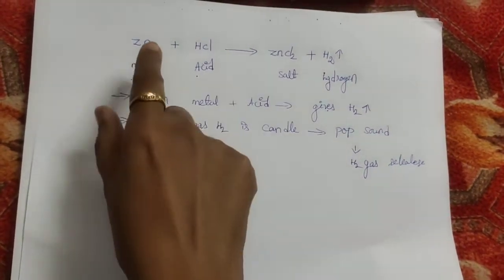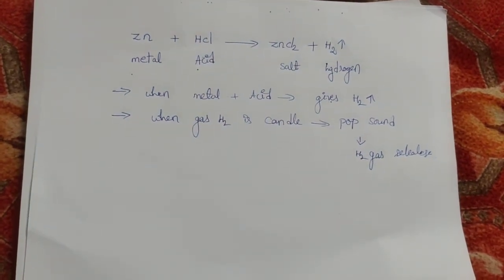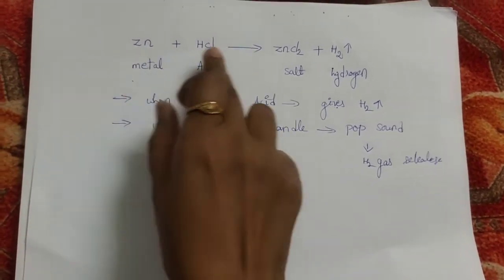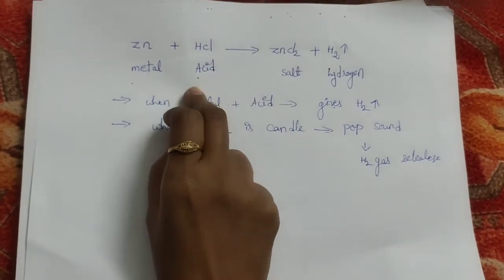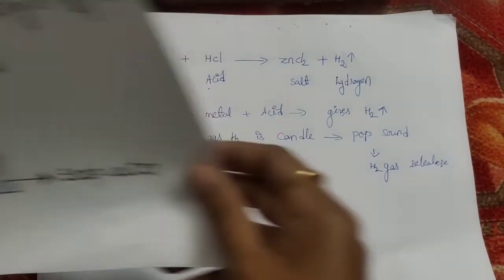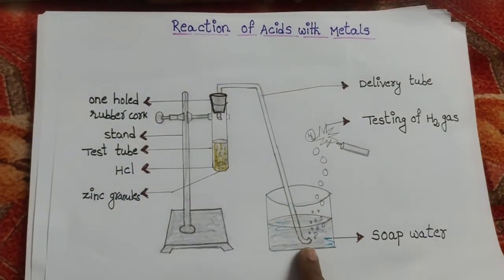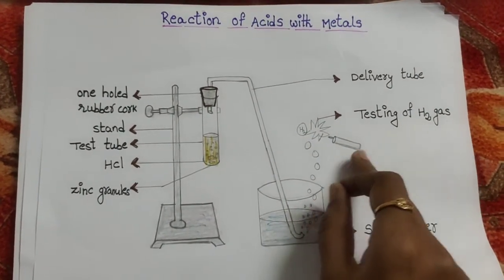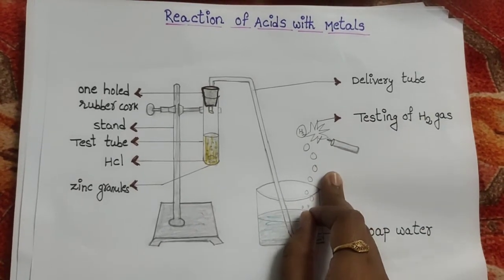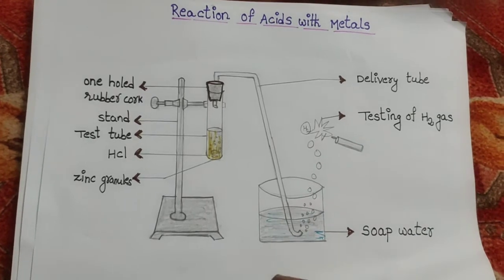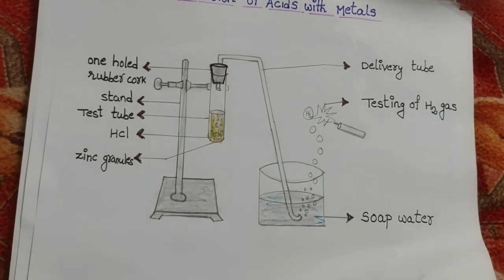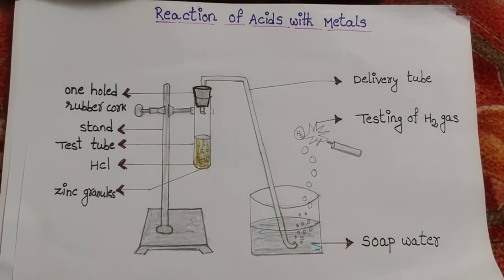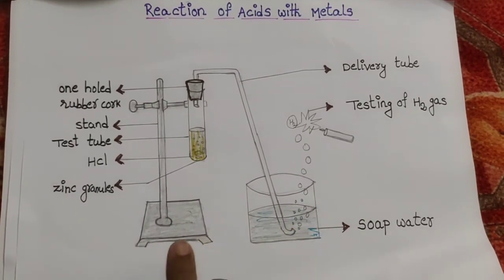In summary: take a test tube filled with zinc and HCl. The gas released is passed through a delivery tube into a soap solution, producing bubbles. The bubbles are tested with a candle or matchstick. When tested, it gives a puff sound, confirming the gas is hydrogen. The conclusion is that when acids react with metals, hydrogen gas is produced.